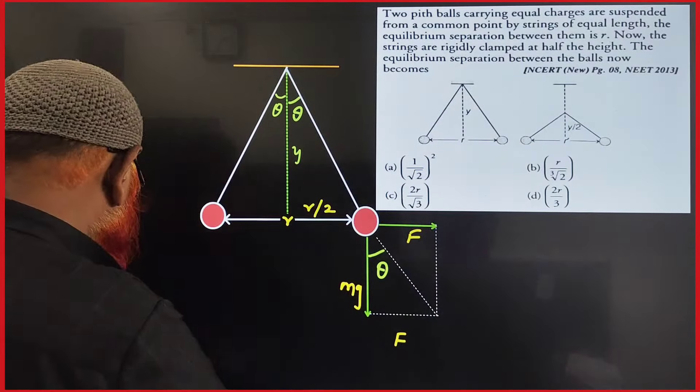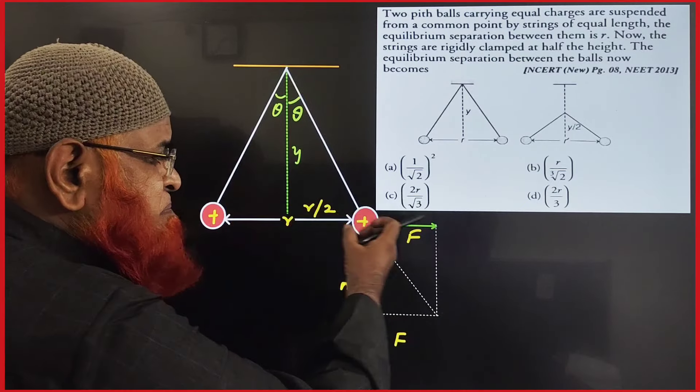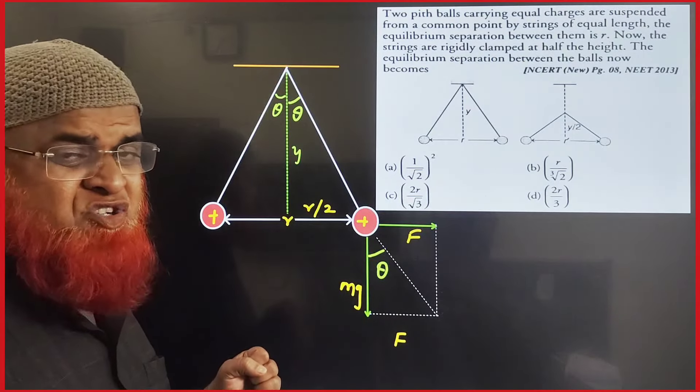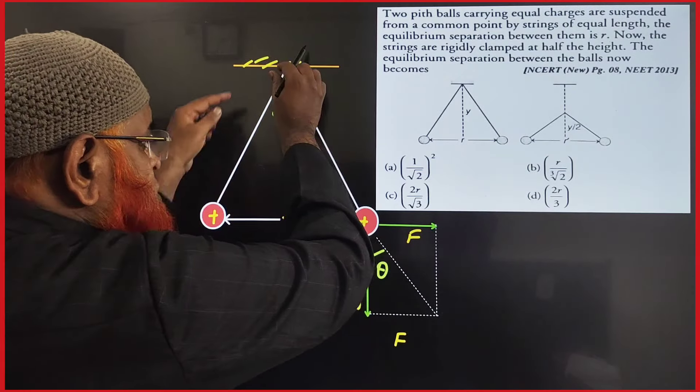Here these are the two charged bodies. Let us imagine they are having same positive charges, they have been repelled by repulsion forces and they have been hanged by two threads.